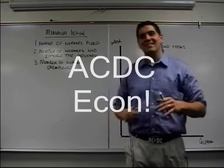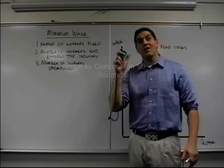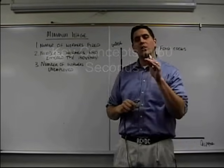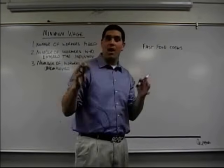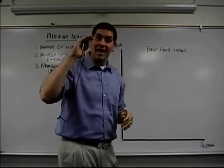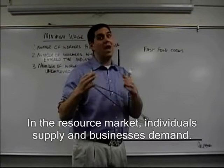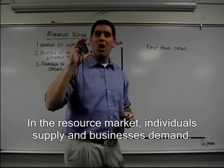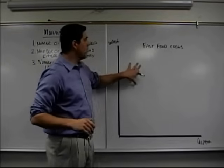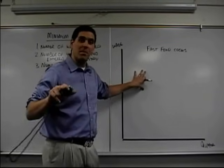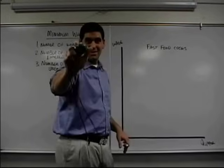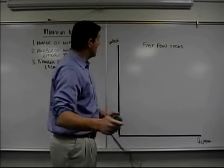Hey, how are you doing? This is Mr. Clifford with ACDC Econ, Key Economic Concepts in 60 Seconds. Today we're going to talk about the resource market. Your teacher already talked about buying and selling resources and how individuals, you and me, are suppliers and how firms are the demanders. We're going to talk about the supply and demand for fast food cooks and then throw in the minimum wage. I'm going to show you these concepts in 60 seconds.